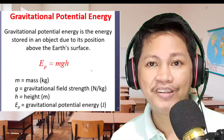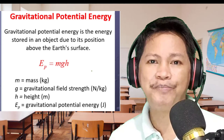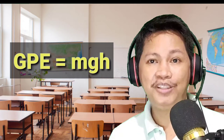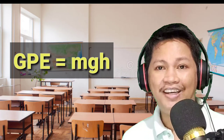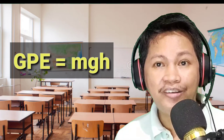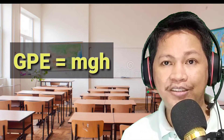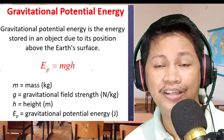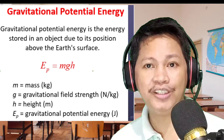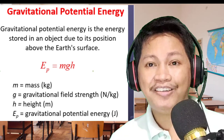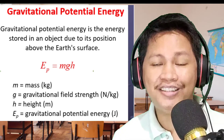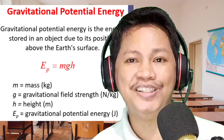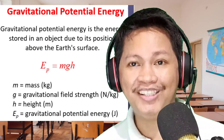The equation is: E sub p equals mgh, or GPE equals mgh — mass times acceleration due to gravity times height. In this formula, m refers to mass expressed in kilograms (kg); g is the gravitational field strength, or acceleration due to gravity, with a constant value of 9.8 meters per second squared; h represents height in meters; and E sub p (or GPE) represents gravitational potential energy.